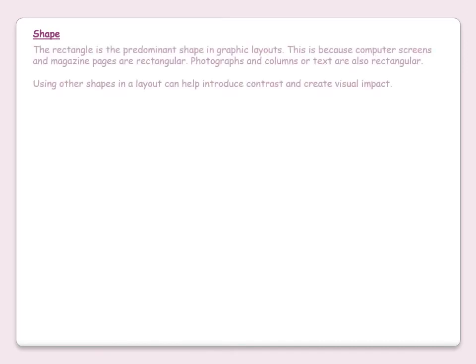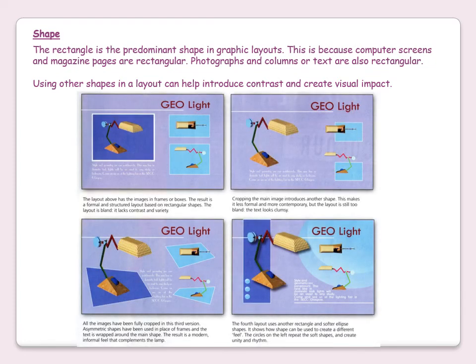Shape. The rectangle is the predominant shape in graphic layouts because computer screens and magazine pages are rectangular. Photographs and columns of text are also rectangular. Using other shapes in a layout can help introduce contrast and create visual impact. A layout with images in frames or boxes results in a formal and structured layout based on rectangular shapes — the result is bland and lacks contrast and variety.